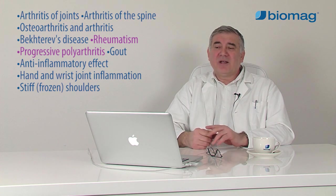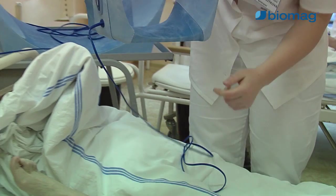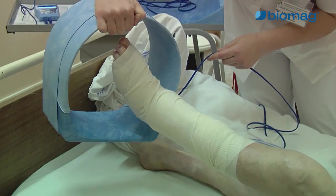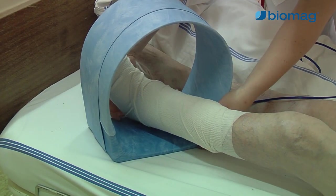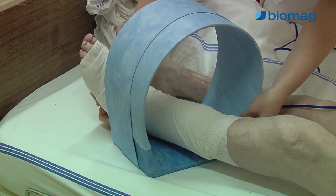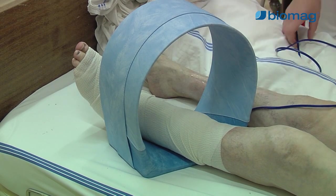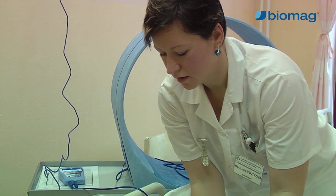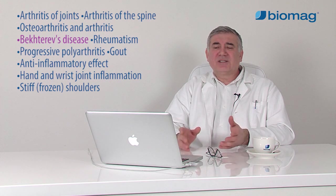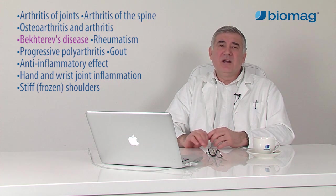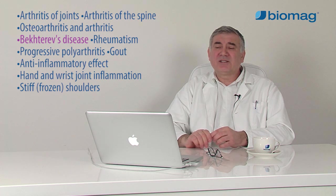Rheumatoid arthritis, progressive polyarthritis, or joint rheumatism, is a systemic chronic inflammatory disease of the musculoskeletal tissues. Middle-aged women are the most frequently affected group. It is manifested by pain, a feeling of morning stiffness, and swelling of the small joints — hand, wrist, ankle — but can affect the large joints, hips and knees as well.